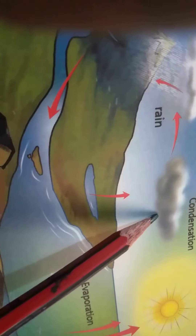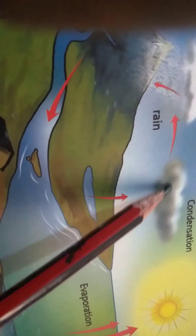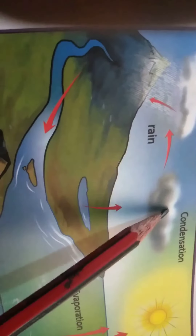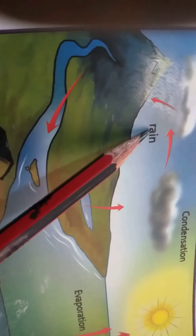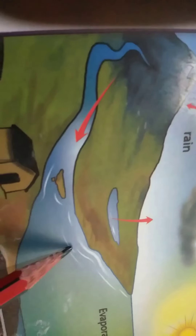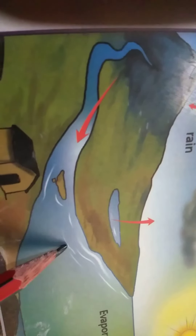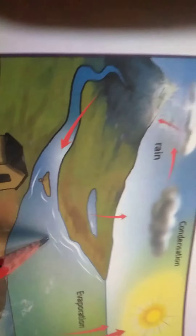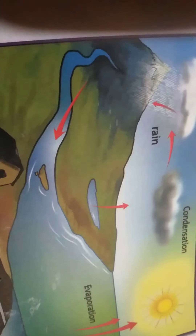Water vapor to clouds and clouds to rain by condensation is known as the water cycle. This cycle of evaporation and condensation takes place continuously in nature.